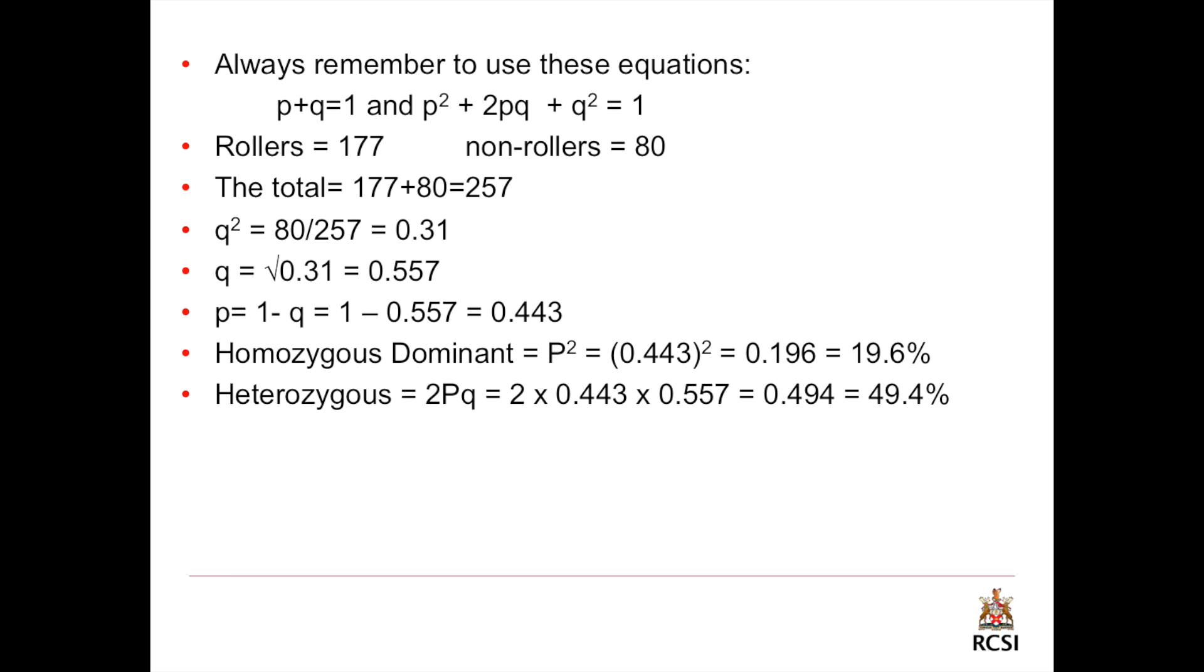And to get the heterozygous, we multiply 2pq. And this by 2 multiplied by 0.443 multiplied by 0.557, which gives us 0.494. To get the percentage, just multiply it by 100, and this will give us 49.4%.